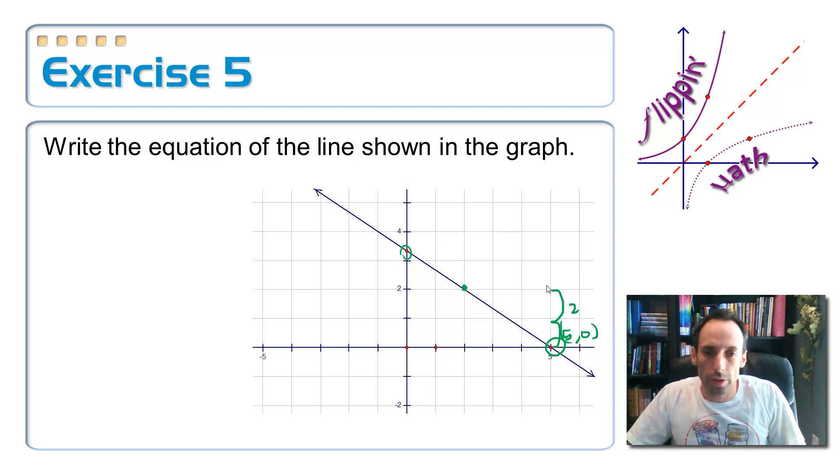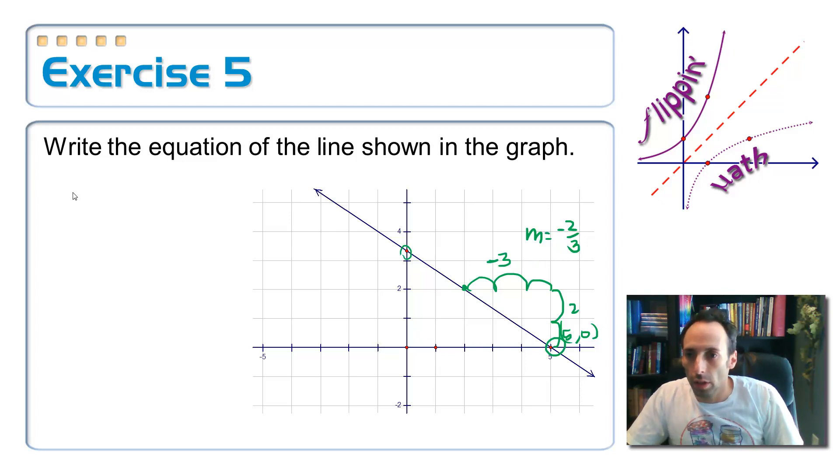Up one, two. So I'll rise at two. And then left, one, two, three. So my slope is two over negative three, since I went to the left. So here's my slope. Negative two-thirds. Now let's write that thing in point-slope form to start off with. Y, we're going to use that point that we found, five, zero. Y minus zero is equal to negative two-thirds from my slope times x minus five. I'd be done if I was just writing in point-slope form.